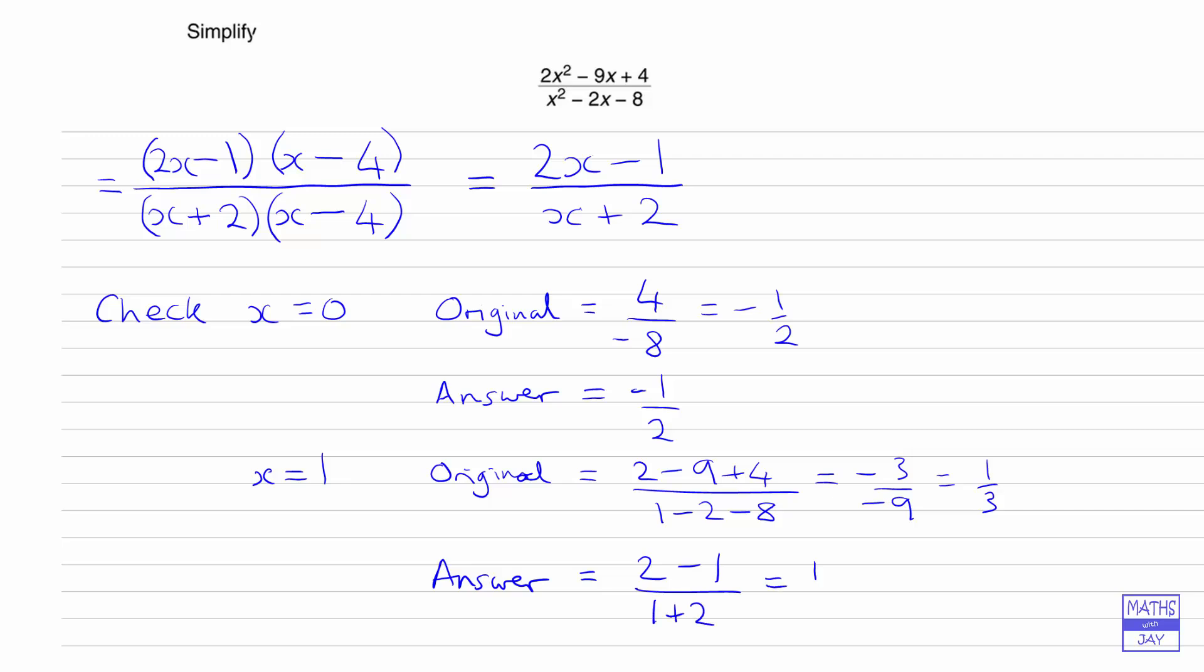There's just a couple of checks to show that our answer is likely to be correct. There's no proof there, but it's checking that for a couple of values of x we have got the right thing happening. The answer is that the original fraction simplifies to 2x minus 1 over x plus 2.